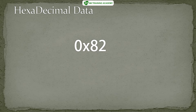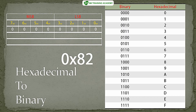Let's take the number 0x82. Most often hexadecimal numbers are prefixed with 0x, which means the number following 0x is in hexadecimal format. Please note: whenever you see a 0x prefix on any number, that number is a hexadecimal number. So here, 82 is not 82 in decimal — it is 82 in hexadecimal format because of the prefix 0x.